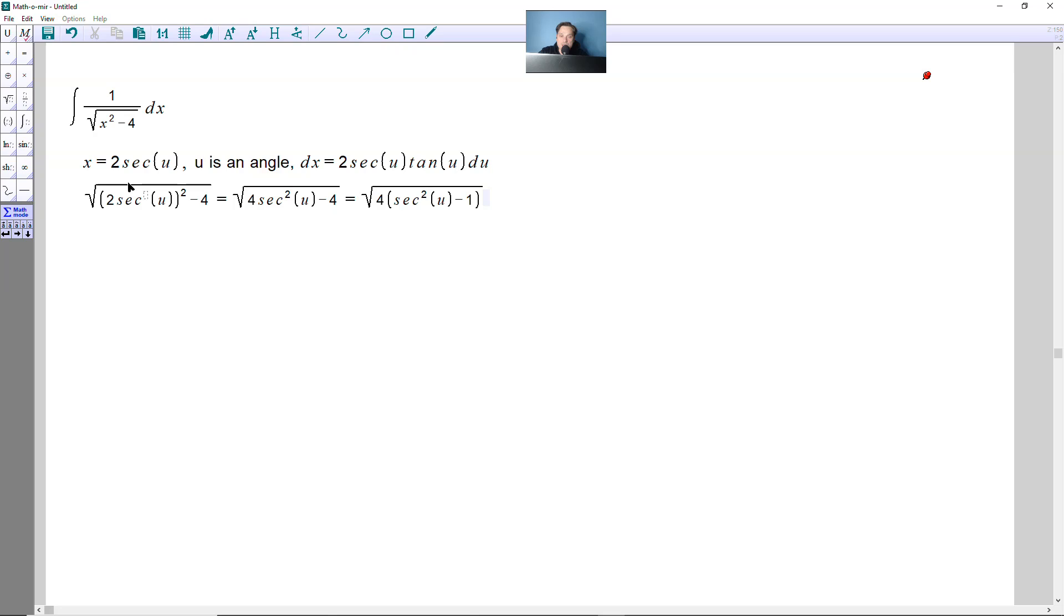And now this part that says secant squared of u can be replaced directly with tangent squared, it's equivalent to it, so it's going to be the square root of 4 tangent squared of u. You're going to take the square root, so it's going to be basically 2 tangent of u.